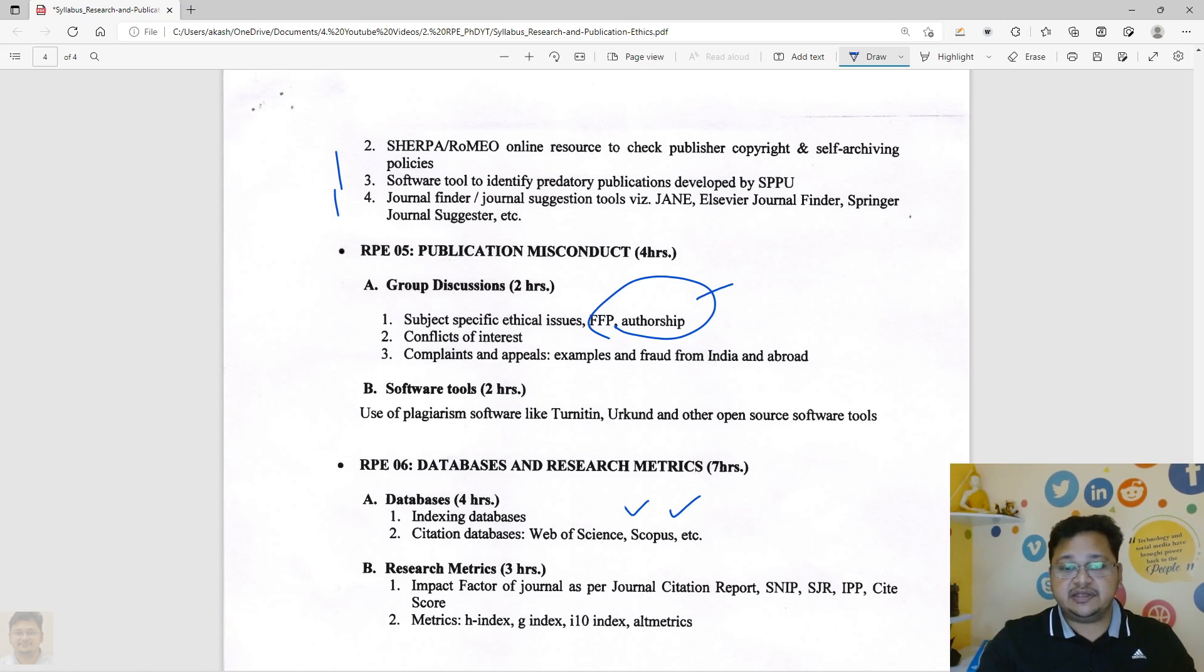Then research metrics also, about Scopus, this I'll be covering in due course of time. Then indexing or the h-index, g-index, i10 index, altmetrics, every all this sort of thing.